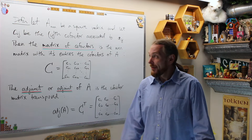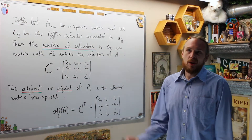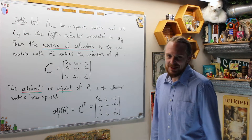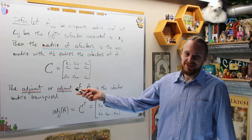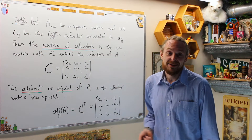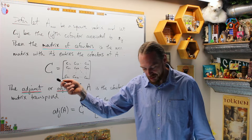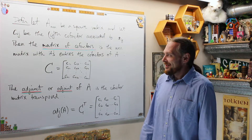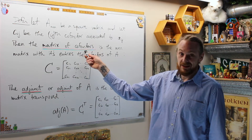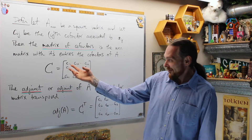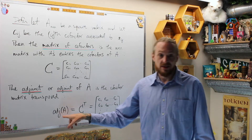We need one last definition before we state our main result, which is the cofactor matrix transposed. This is usually how I present it to first-year students because they don't want to learn 'adjunct' or the difference between 'adjoint.' Adjoint is sometimes used in other contexts in linear algebra. I somewhat disagree with both scenarios — a first-year student just wants to do 'matrix cofactor transposed.' You build the matrix of cofactors and then transpose it. That's what the adjunct is.